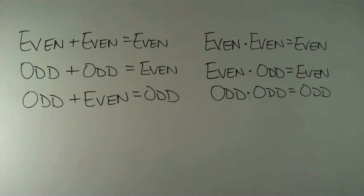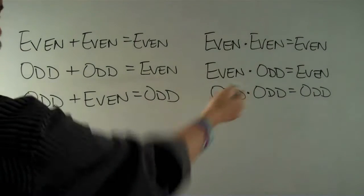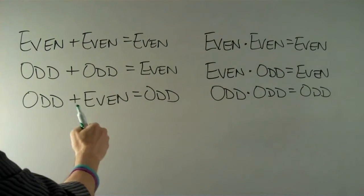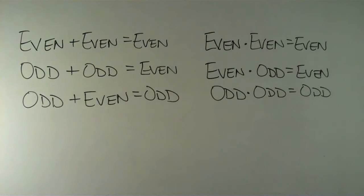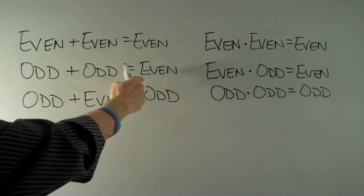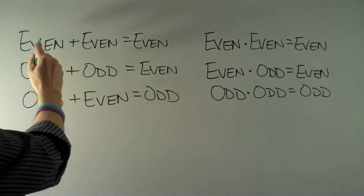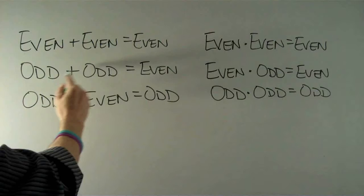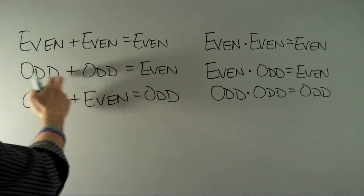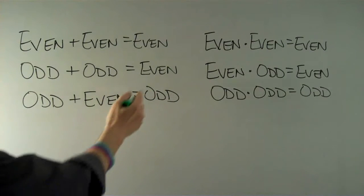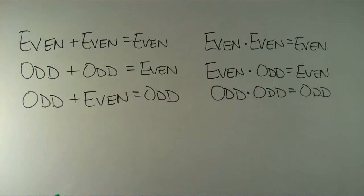If we take an even number and add an even number, for example 2 plus 4, we get 6, another even number. Odd plus odd, let's say 5 plus 3 gets us 8, an even number. So whenever we add an even plus an even we get even. When we add odd plus odd we get even. The only time you can add two integers together and get an odd answer is when you add odd plus even.